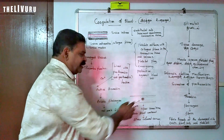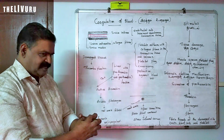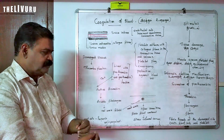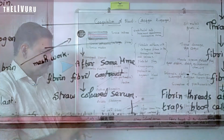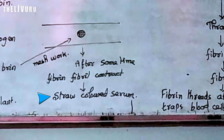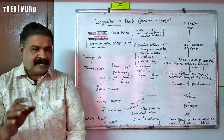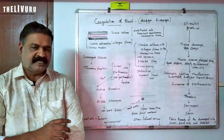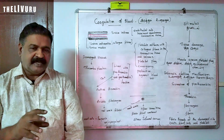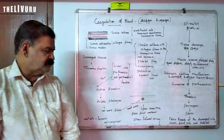After some time, the fibrin contracts. When fibrin contracts, a yellowish fluid comes out from it — that is called serum. Serum is the fluid released after coagulation when fibrin contracts. Serum is essentially plasma minus fibrinogen, because fibrinogen was used up in the blood coagulation process. So: serum = plasma − fibrinogen.